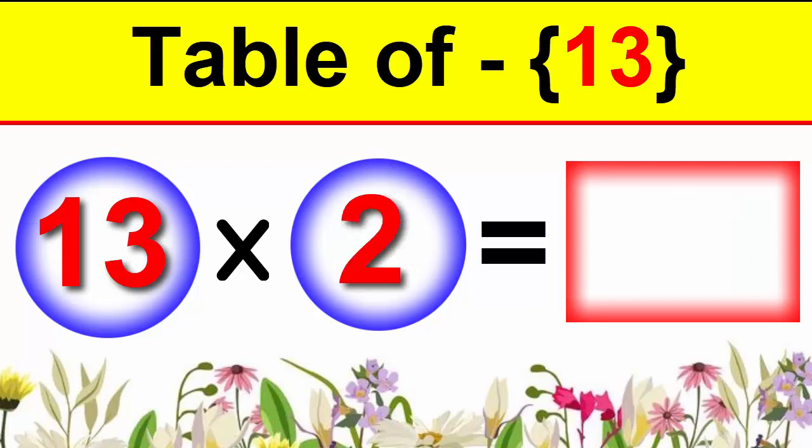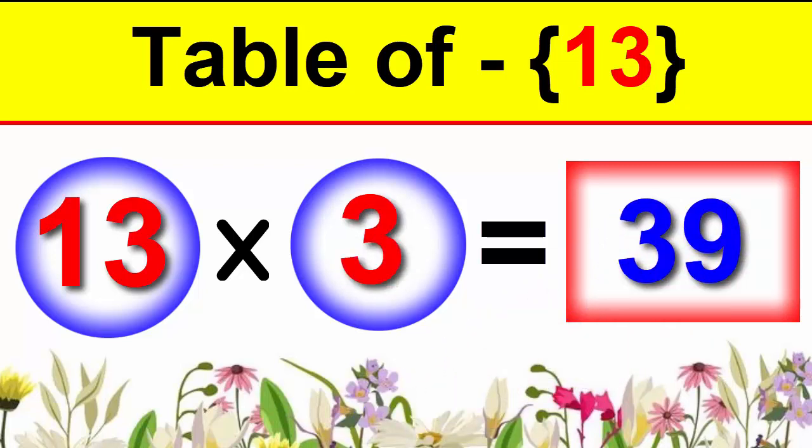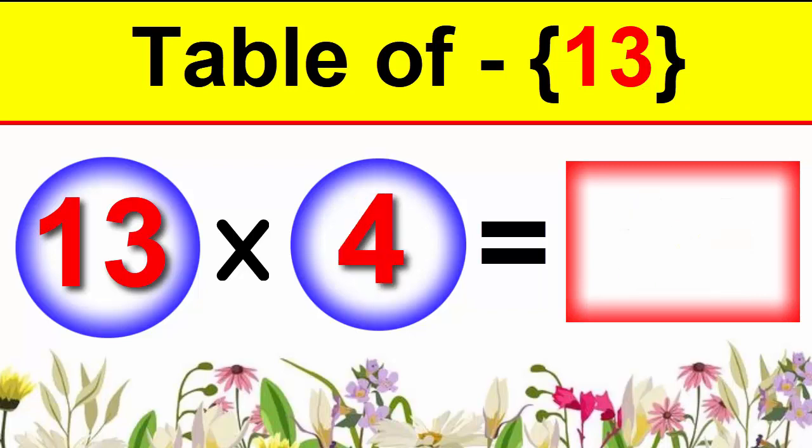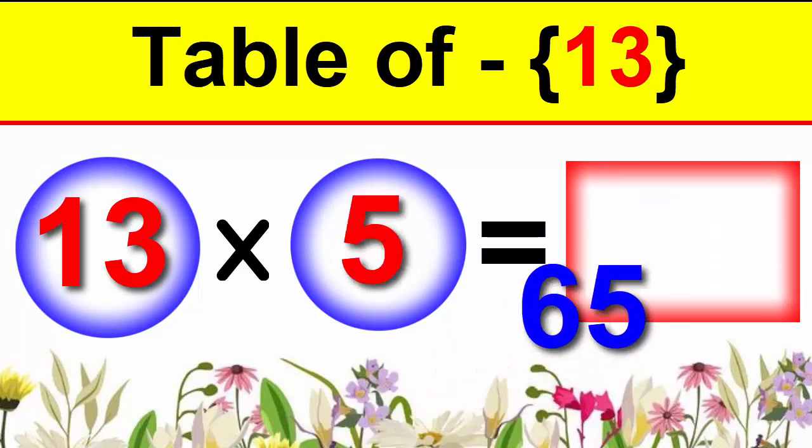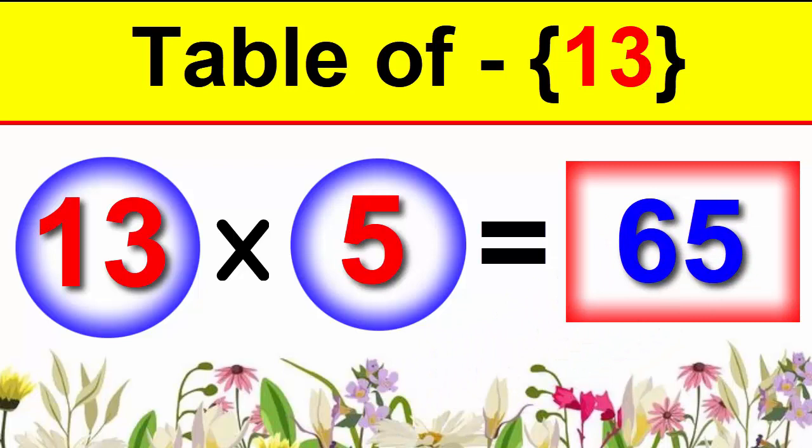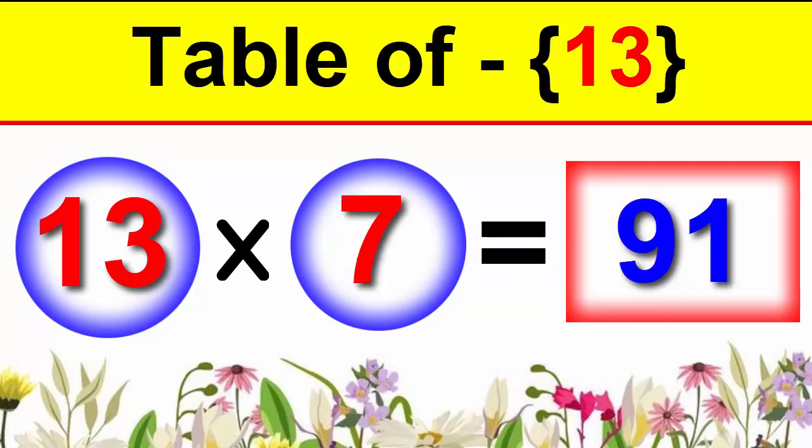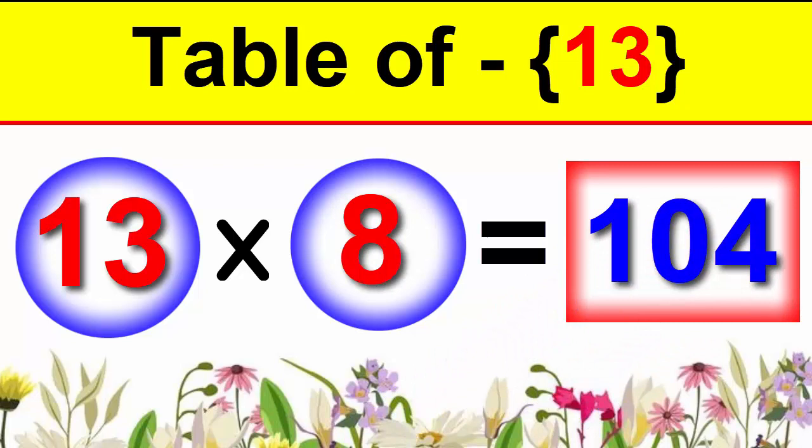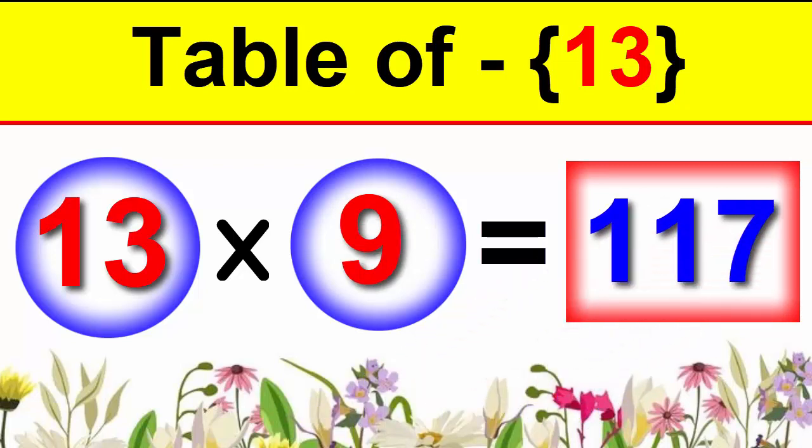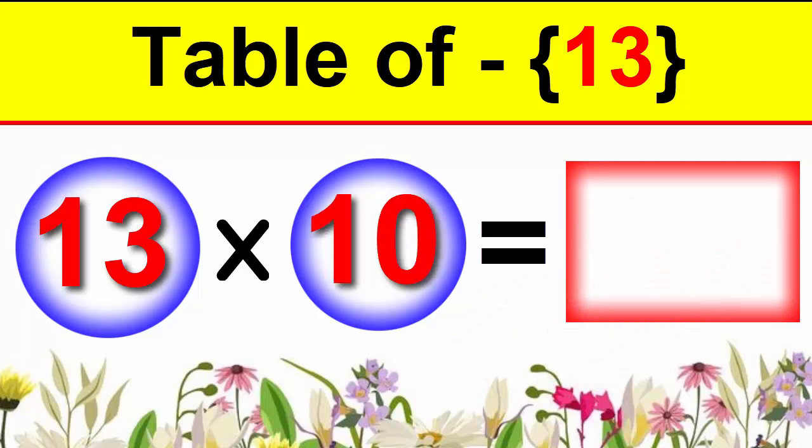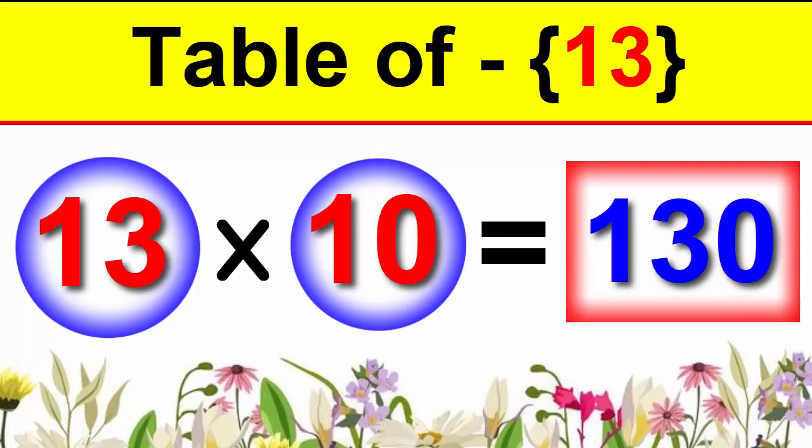13×1 is 13, 13×2 is 26, 13×3 is 39, 13×4 is 52, 13×5 is 65, 13×6 is 78, 13×7 is 91, 13×8 is 104, 13×9 is 117, 13×10 is 130.